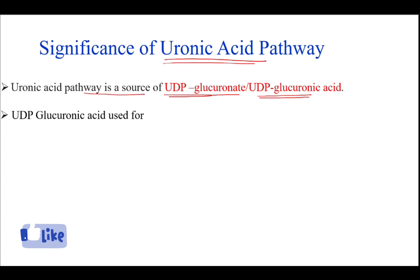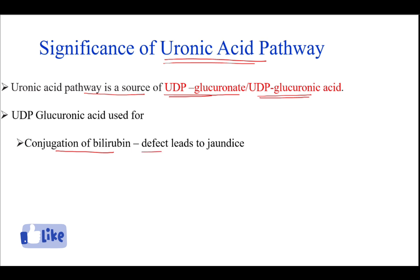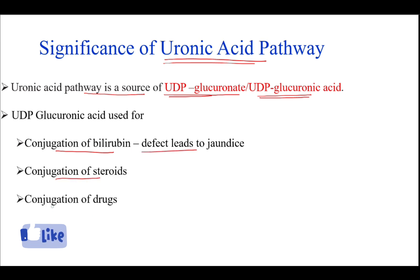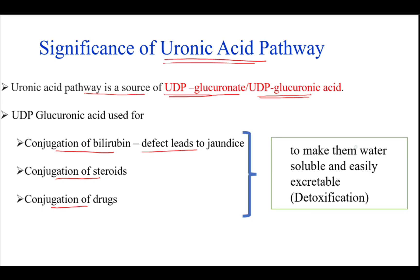UDP-glucuronic acid is used for conjugation of bilirubin — if there is any defect that leads to jaundice — conjugation of steroids, and conjugation of drugs. Conjugation is important because it makes these compounds water-soluble and easily excretable through the process of detoxification.